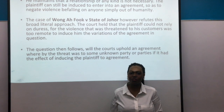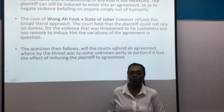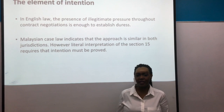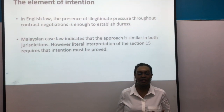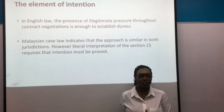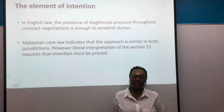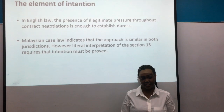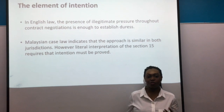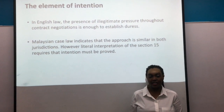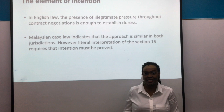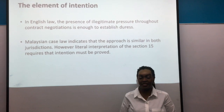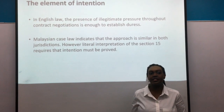However, Hussein still makes a strong case for duress to unknown parties on grounds of humanity, posing the question: are the courts willing to enforce a contract brought about as a result of unlawful threats made to any person? The second distinction is that of intention. The general rule in the English legal system is that intention does not need to be proved — once the plaintiff has established that illegitimate pressure was administered, that is sufficient for a plea of duress. However, in Malaysia, following the literal interpretation of Section 15, intention must be proved.